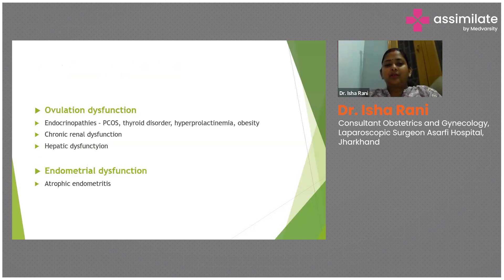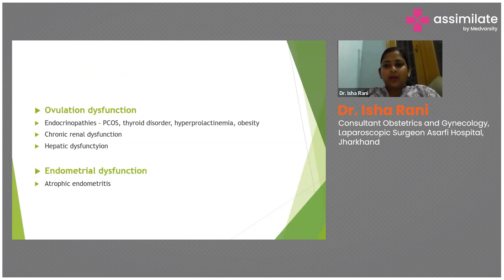Ovulatory dysfunction is the most common AUB seen in clinical practice because PCOS has become rampant, almost like an epidemic. All endocrinopathies are included under ovulatory dysfunction: PCOS, thyroid disorder, hyperprolactinemia, obesity, and any chronic disease that impairs ovulation and dysregulates the menstrual cycle.